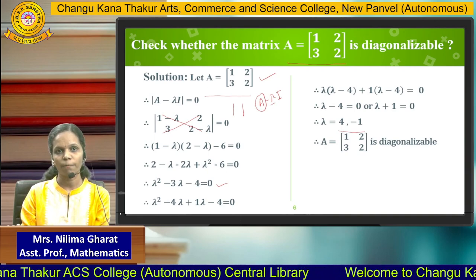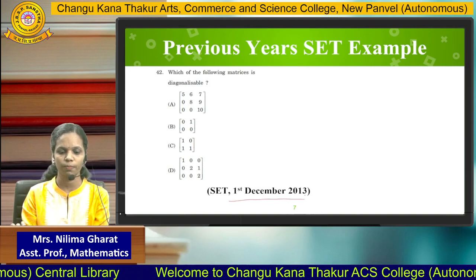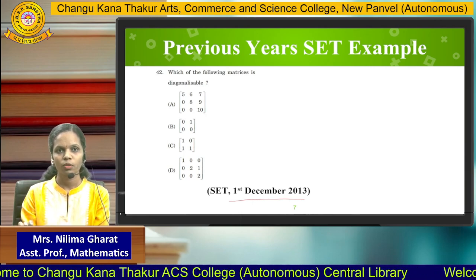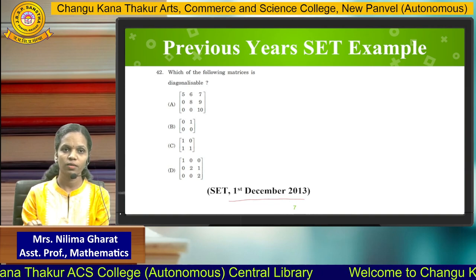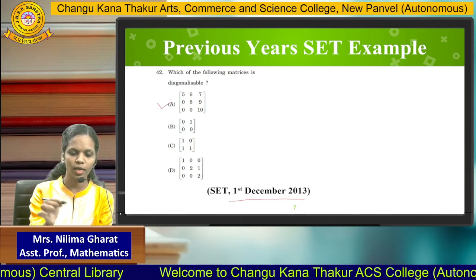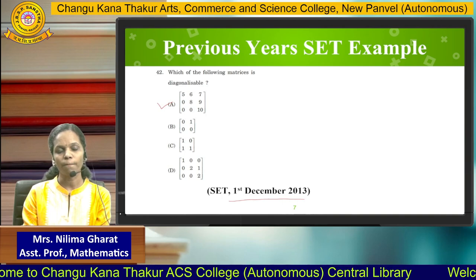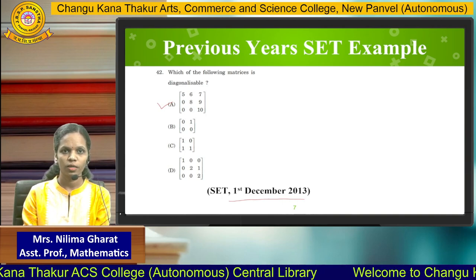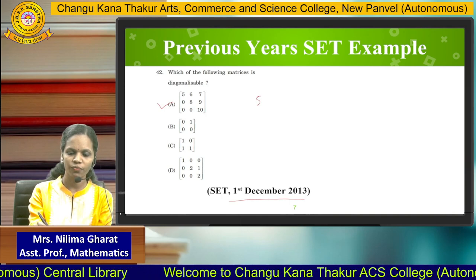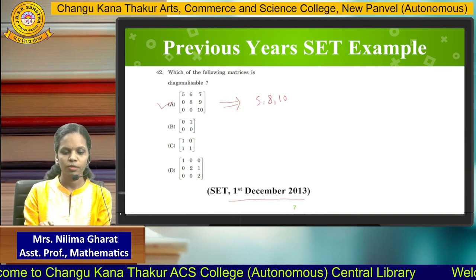Next we will see another example from a previous year SET exam held on 1st December 2013. The example is: which of the following matrices is Diagonalizable? There are 4 options. By the theorem, if A has n distinct eigenvalues then A is Diagonalizable. For option A, this is a 3 by 3 upper triangular matrix. Since it is upper triangular, the eigenvalues are the diagonal elements, which are 5, 8, and 10. All are distinct, therefore this matrix is Diagonalizable.